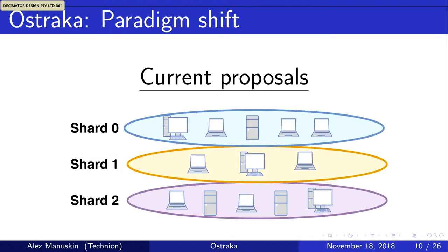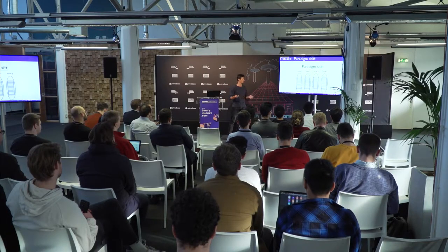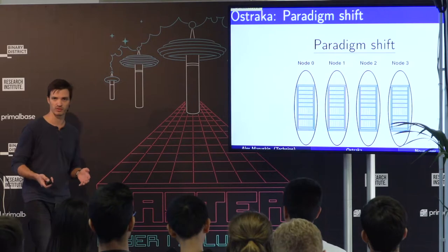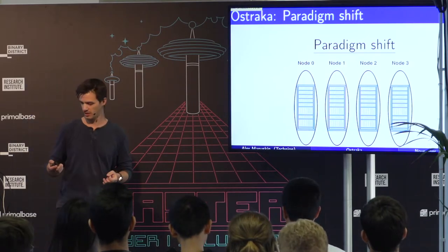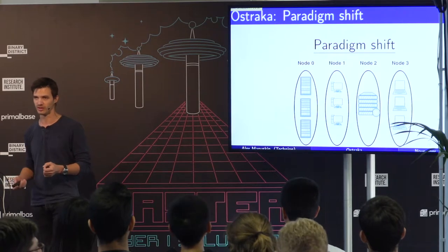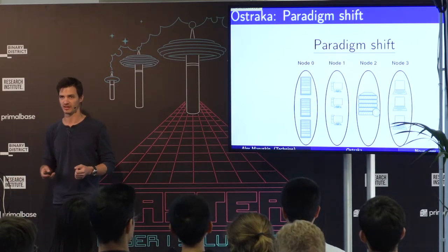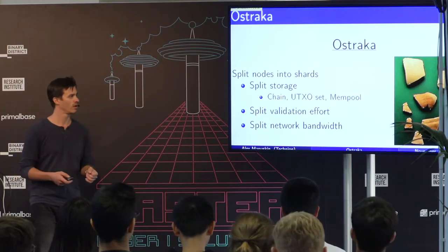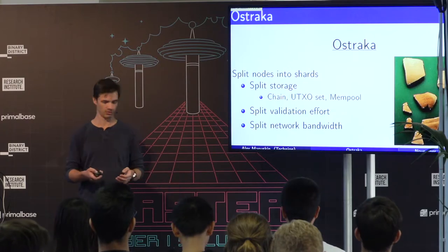If blockchains today look like a single chain with small nodes validating it, and sharding solutions split the chain between shards with small systems on each — with the drawbacks we mentioned — what we're saying is: let's run a single, very secure chain with big systems running full nodes. To keep it accessible and open, we're going to shard the nodes themselves. We're using the term sharding, but not in the classical sense — we're sharding the actual node.